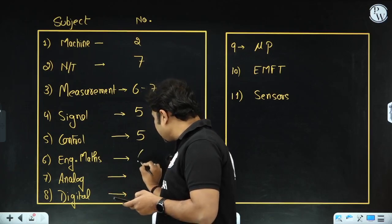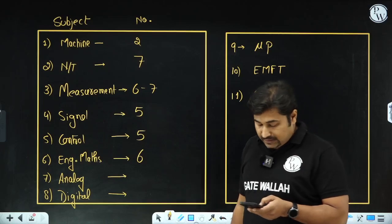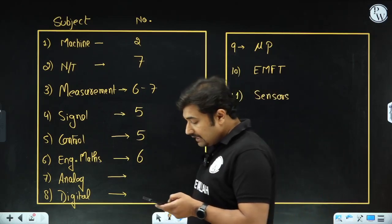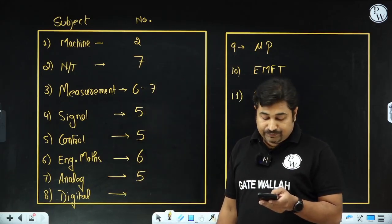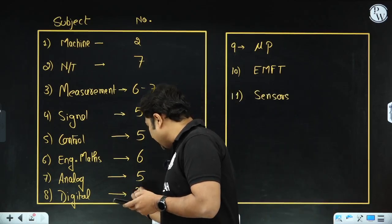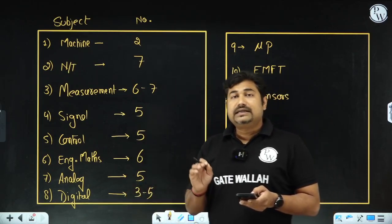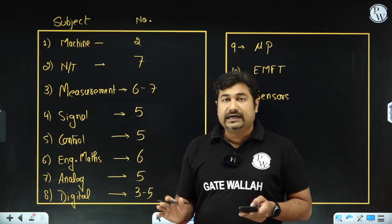Engineering maths has six questions from engineering maths, a little bit on the easy side. Hoping all of you have already done the engineering maths questions. Analog electronics has five questions, formula based, hoping all of you have already done. And for digital electronics, there are three questions, nearby three to five questions. Digital electronic questions are easy, so hoping all of you have already attempted those questions.